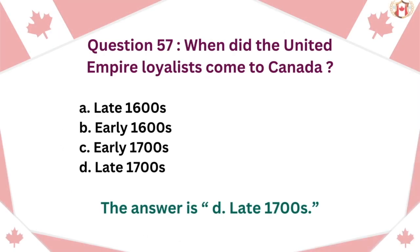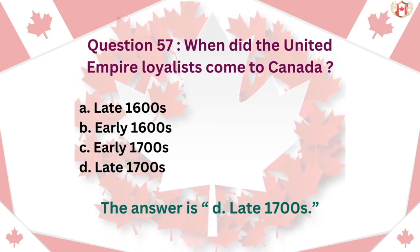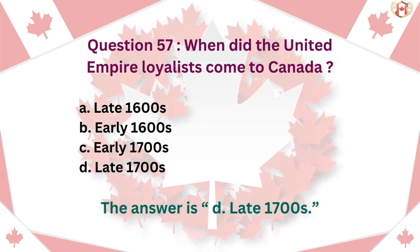Question 57: When did the United Empire Loyalists come to Canada? A. Late 1600s, B. Early 1600s, C. Early 1700s, D. Late 1700s. The answer is D. Late 1700s.